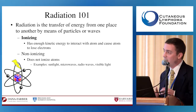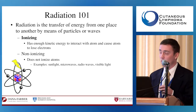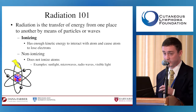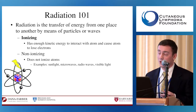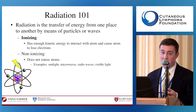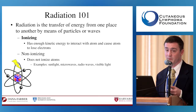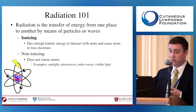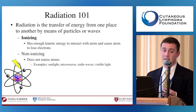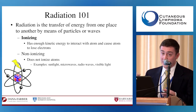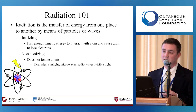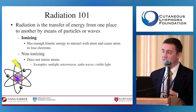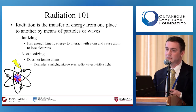Radiation works because a photon or electron enters into the skin or cell and causes water molecules to ionize. Those water molecules then give off free radicals—much like buckshot from a shotgun—which can go into the DNA and cause damage. Unless the cell is dividing, it doesn't really need that instruction manual. But when a cell is dividing, it notices the damage, can't repair it, and dies.